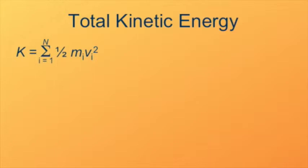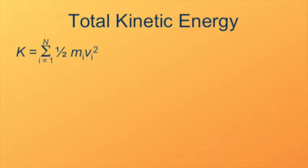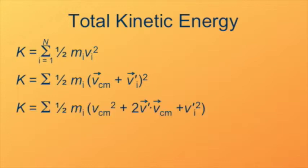The total kinetic energy of the system is the sum of the kinetic energies of the individual particles. Since v sub i can be expressed as the velocity of the center of mass plus the relative velocity of the particle in the center of mass frame, I'll express v sub i as that sum. Since I'm squaring v sub i, I have to square that binomial, which introduces a dot product. When squaring a vector, we're dotting it with itself. The two squared terms don't need vector notation, but the cross term, where we multiply the two different vectors, requires the dot product notation.